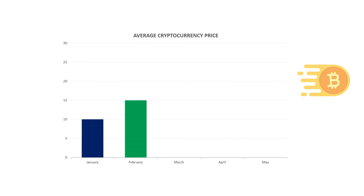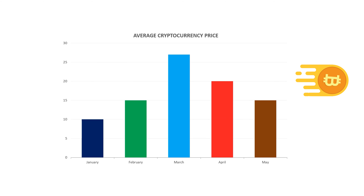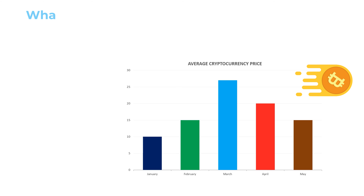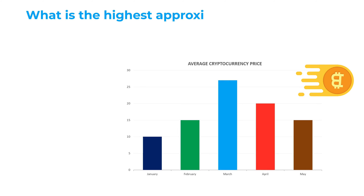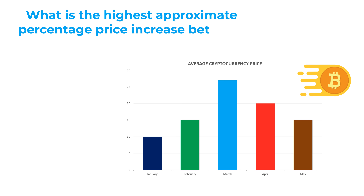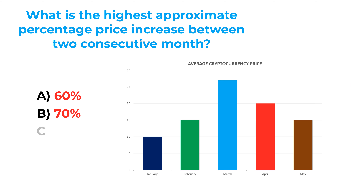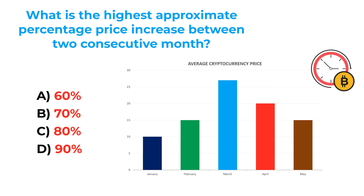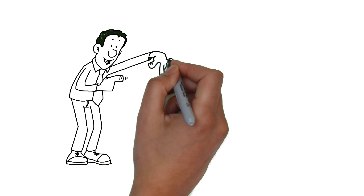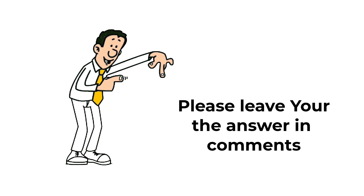And now here's the practice problem for you. You're presented with a chart showing the average price of cryptocurrency for each month from January to May. You need to calculate the highest approximate percentage price increase between two consecutive months. Choices: A, 60%; B, 70%; C, 80%; D, 90%. If you know the answer, please post it in the comment section so I can give you feedback. Thanks for participating and good luck.